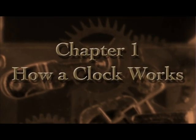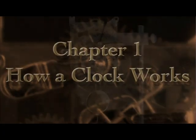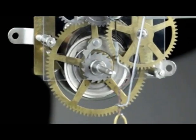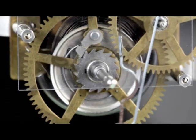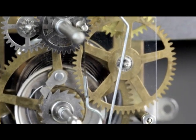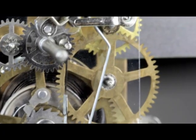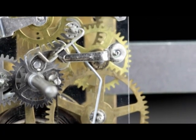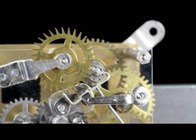Basically, here's how a clock works. The power source, mainspring or weight, provides the power to move the gears or wheels in the wheel train. There is a lot of power stored here, so we must have some way to control its release. That control is provided by the escapement.